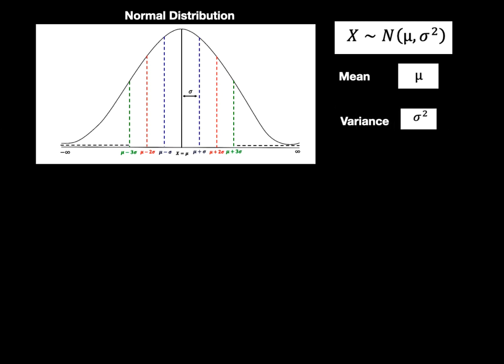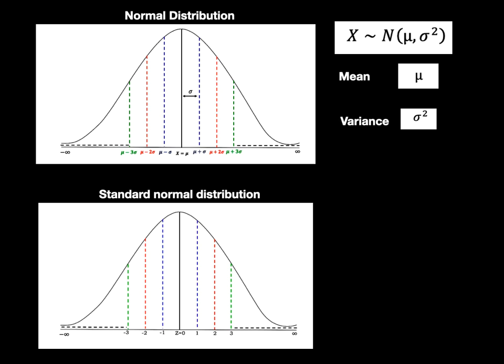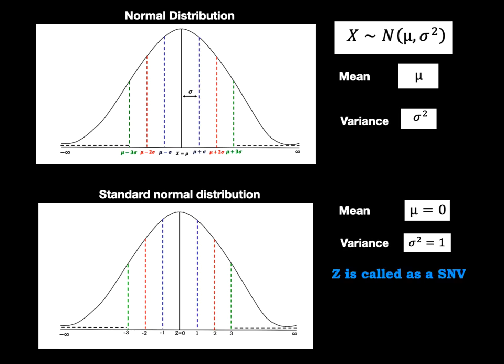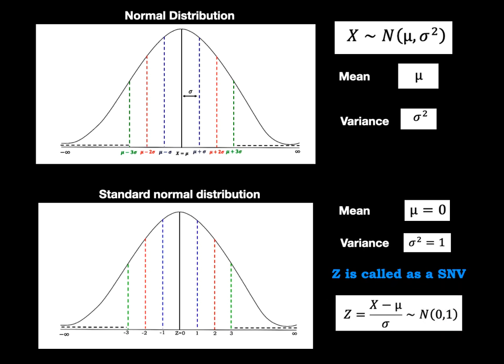In the standard normal distribution, the curve has the center line as z equal to 0. The three dotted lines on the right tail are 1, 2, 3, which continue up to infinity, and on the left side continue to minus infinity. The difference between a normal and standard normal distribution is: when mu equals 0 and variance sigma squared equals 1, the normal distribution converts into the standard normal distribution. Z is called the standard normal variable with formula z equal to x minus mu divided by sigma, which follows normal(0, 1).